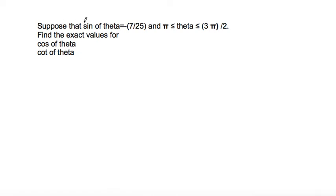This problem says suppose that sine of theta is equal to negative 7 over 25, and theta is between pi and 3 pi over 2. Find the exact values for cosine of theta and cotangent of theta.